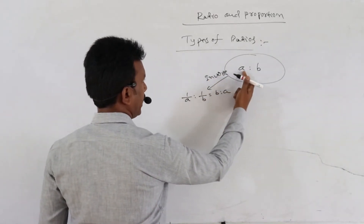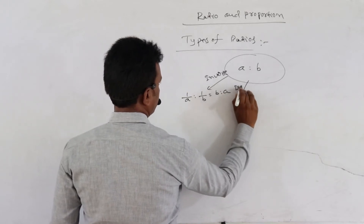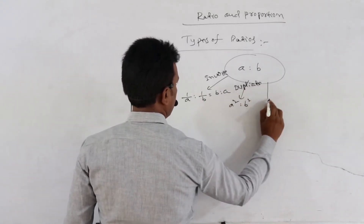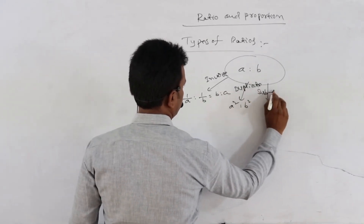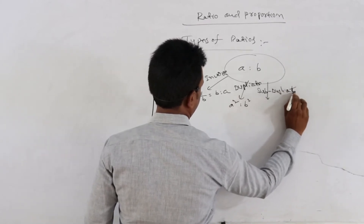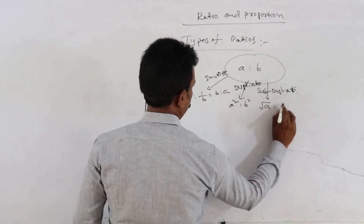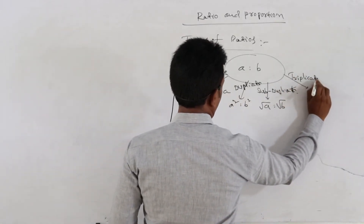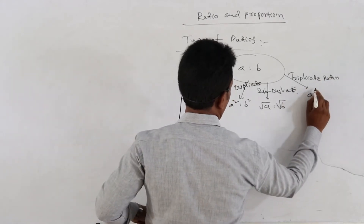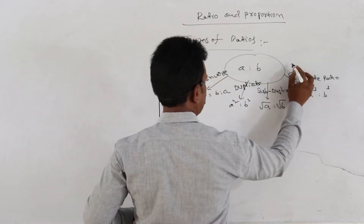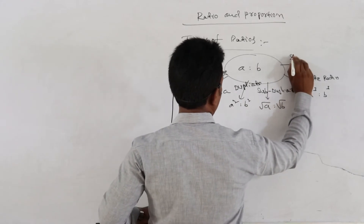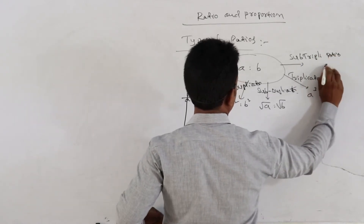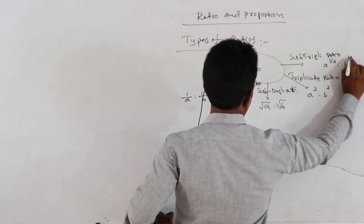The second type is the duplicate ratio, defined as a squared is to b squared. The third type is the subduplicate ratio, defined as root a is to root b. The fourth type is the triplicate ratio, defined as a cubed is to b cubed. And the fifth type, the subtriplicate ratio, is defined as a to the power 1 by 3 is to b to the power 1 by 3.